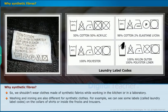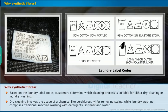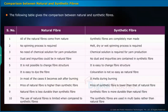Washing and ironing are also different for synthetic clothes. We can see laundry label codes on the collars of shirts or inside frocks and trousers. Based on these laundry label codes, customers determine which cleaning process is suitable — dry cleaning or laundry washing. Dry cleaning involves the use of a chemical like perchloroethylene for removing stains, while laundry washing comprises traditional machine washing with detergents, softener and water.